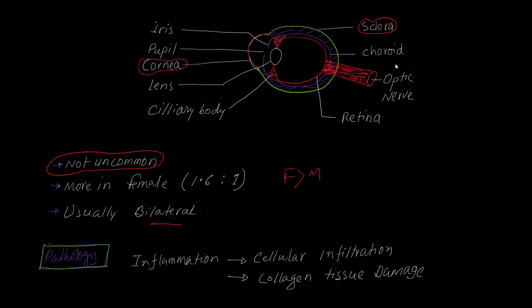What is the pathology behind scleritis? It is inflammation of the sclera. Any inflammation causes cellular infiltration, and here the infiltrative cells are usually chronic inflammatory cells, though acute inflammatory cells like neutrophils may also appear. These inflammatory cells cause cellular damage. As the sclera consists of collagen tissue, destruction of collagen tissue occurs — this is the core pathology of scleritis.